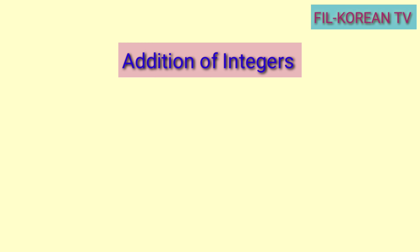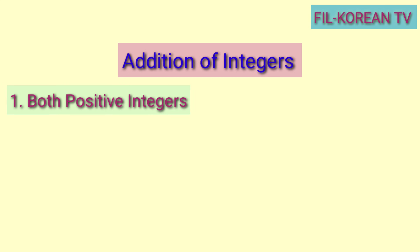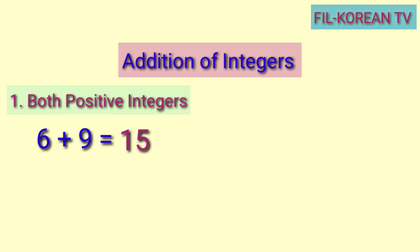Now let's proceed to addition of integers. Let's add first both positive integers. Example: 6 plus 9. The numbers are both positive, so we will just add. 6 plus 9 equals 15. Positive 6 plus positive 9 equals positive 15. In writing positive numbers, we don't need to put the plus sign, because it is understood that a number without a sign is a positive number.